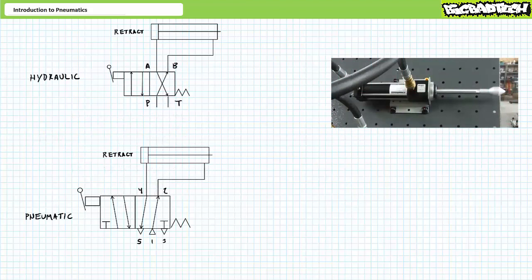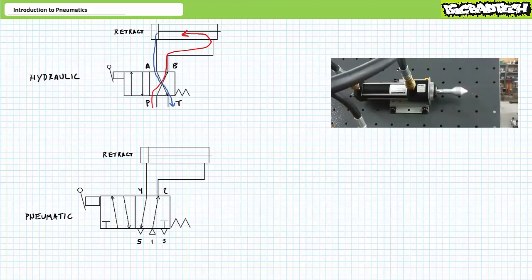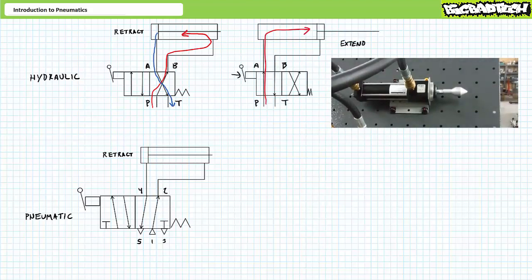Consider a double-acting hydraulic cylinder. When spring offset into the cross connect position, pressurized incompressible oil is routed to the rod end and the cap end is routed to tank at low pressure. The cylinder retracts. When manually positioned to the straight through position, pressurized incompressible oil is routed to the cap end and the rod end is routed to tank at low pressure. The cylinder extends. No surprises here.